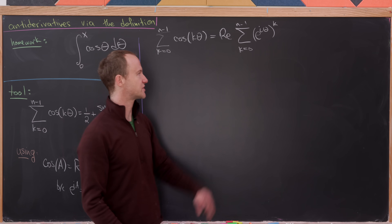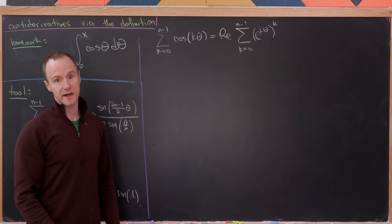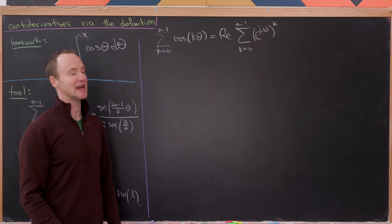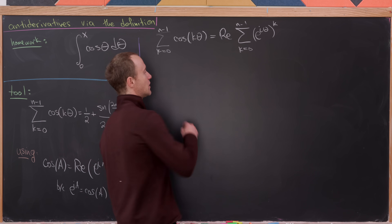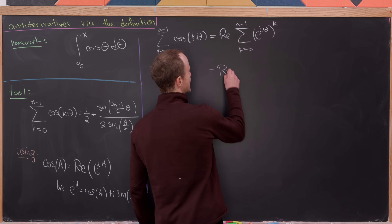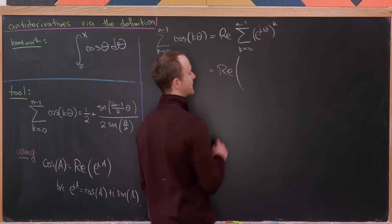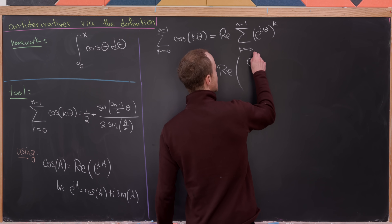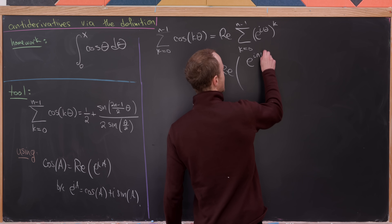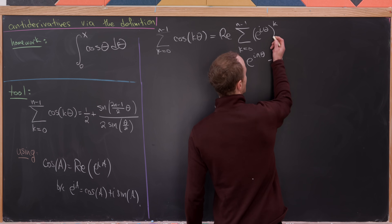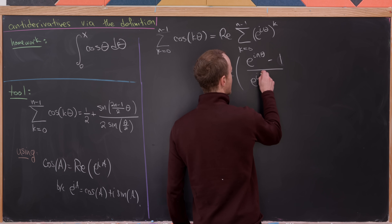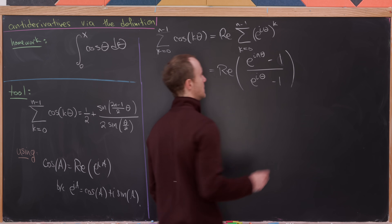The starting term is one (e to the zero), and the common ratio is e^{iθ}. So we can use the standard formula for the sum of a finite geometric series, which leaves us with (e^{inθ} minus 1) over (e^{iθ} minus 1).